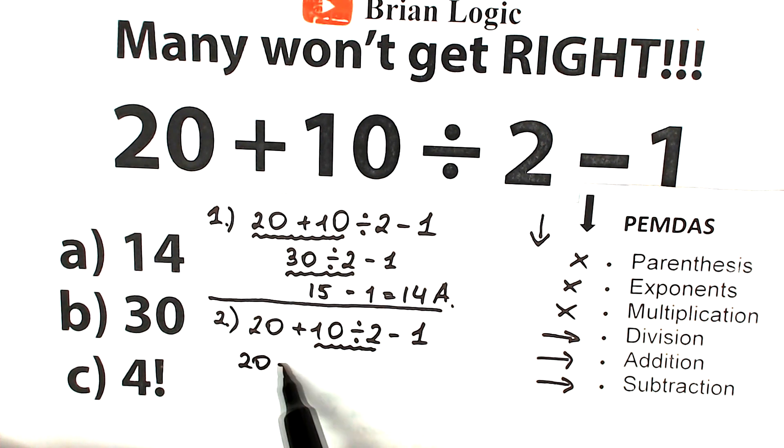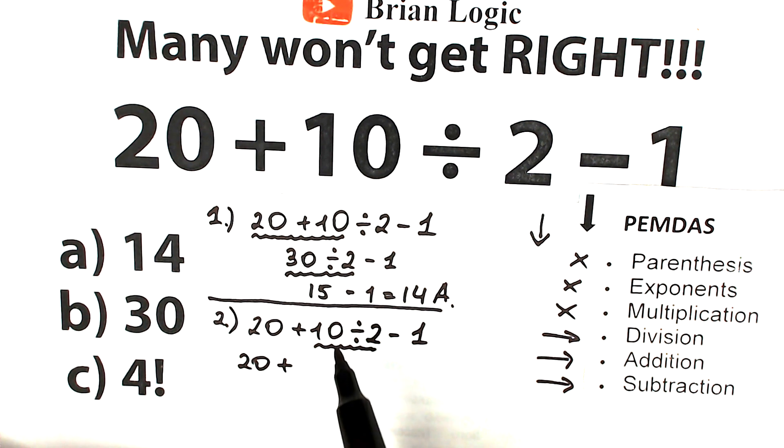So we have 20 plus 10 divided by 2 equals 5, and minus 1.